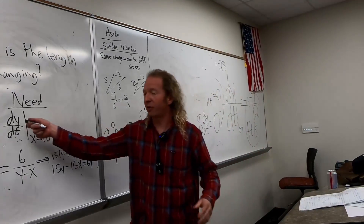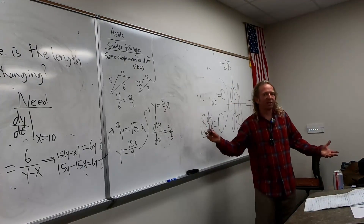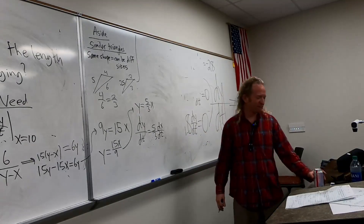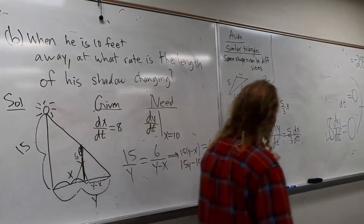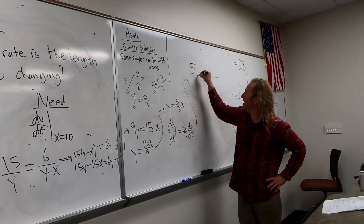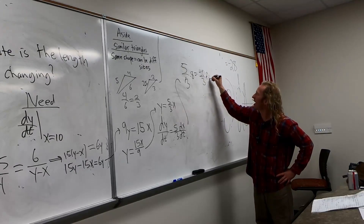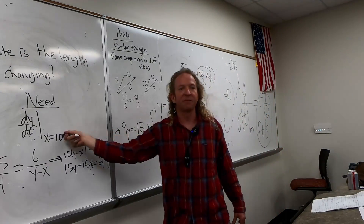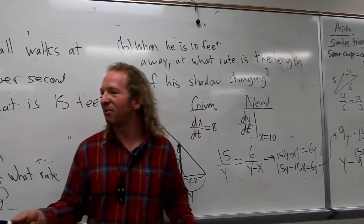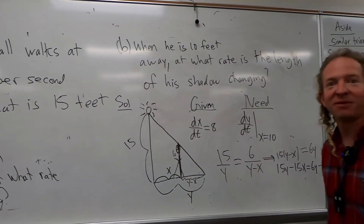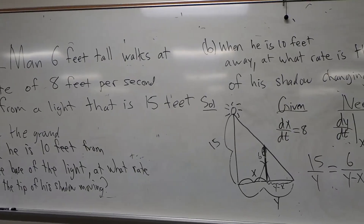So now we can take the derivative. DY/dt is simply 5/3 times DX/dt. We know DX/dt is 8, so it's going to be 5/3 times 8, which equals 40/3 feet per second. You don't have to worry about plugging in the 10, because there's nowhere to plug it into. So it doesn't matter how far he is — the rate of change is the same. Shadows are weird. That's part A.